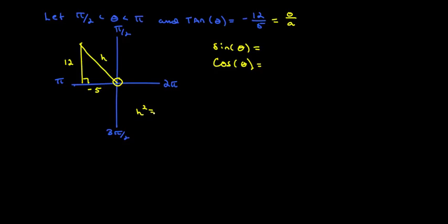The hypotenuse squared should equal the following. The hypotenuse is always the positive value, so we're going to leave this as 13.